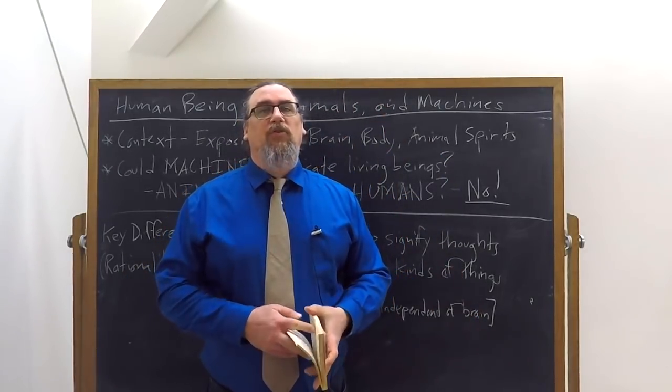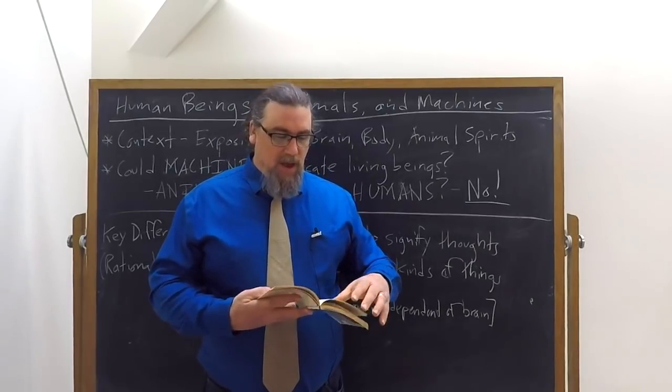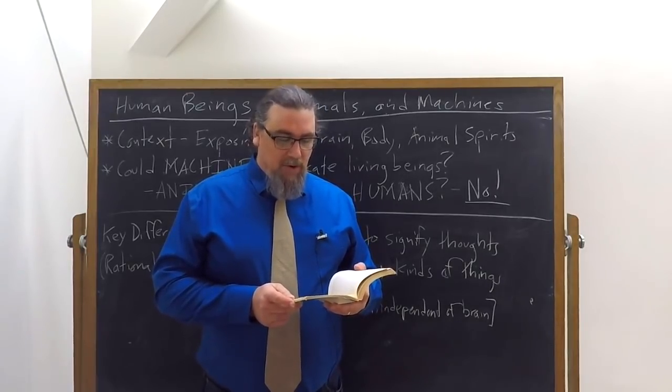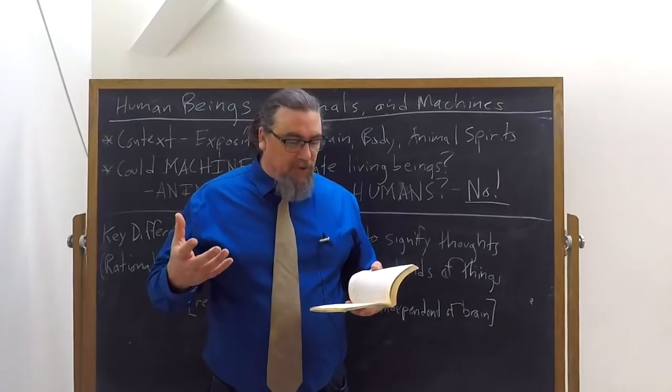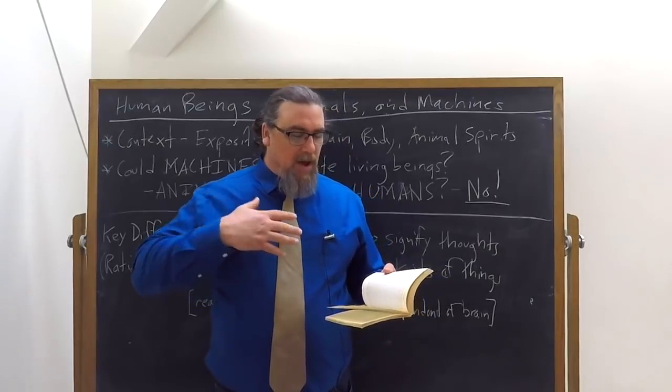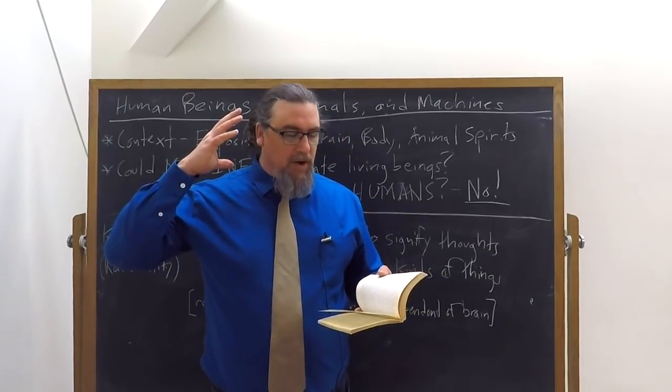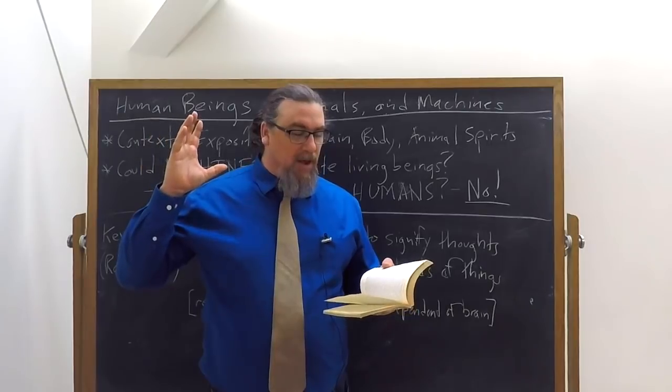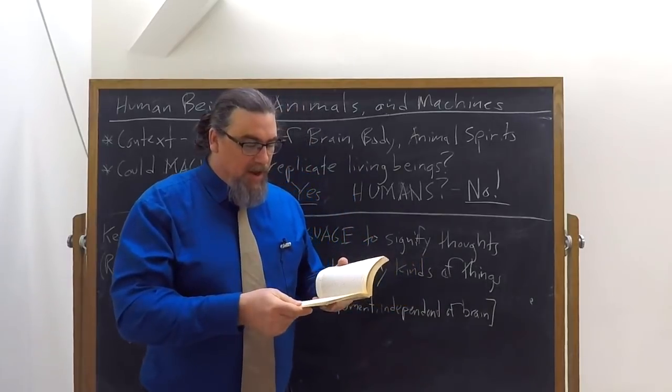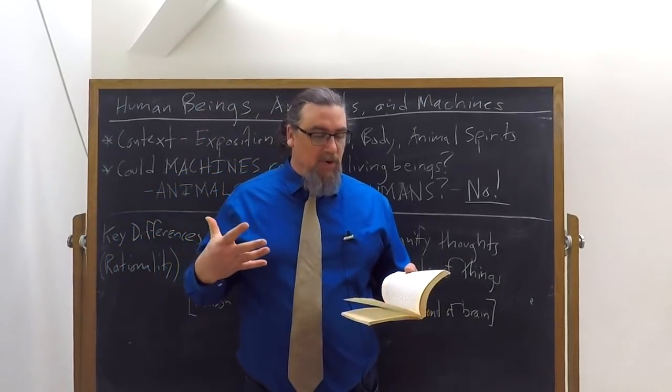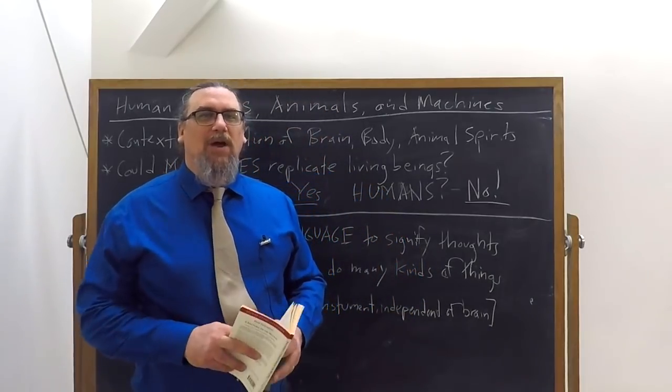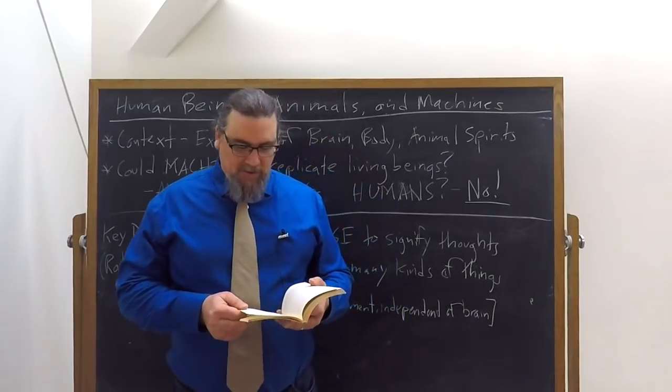He says that he had explained all these matters, he'd shown what structure the nerves and muscles must have in order to enable the animal spirits to have the power to move its members. He talks about which changes must occur in the brain to cause states of waking, sleeping, dreaming, how light, sound, smells, taste, and all other qualities can imprint various ideas through the intermediary of the senses.